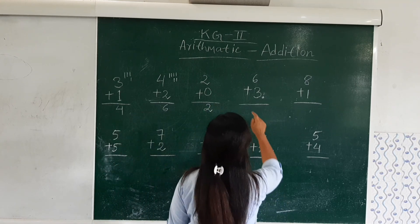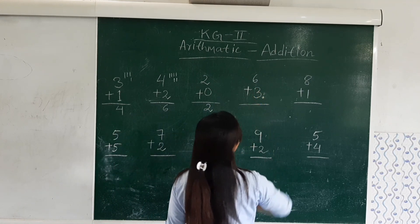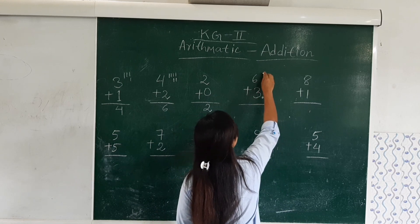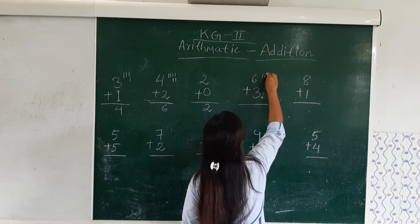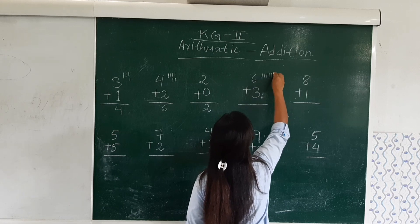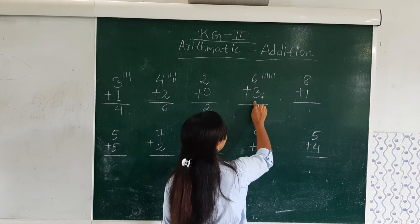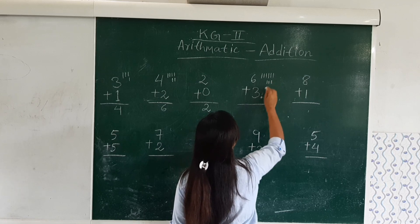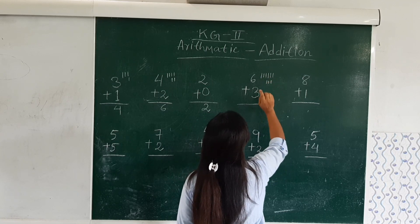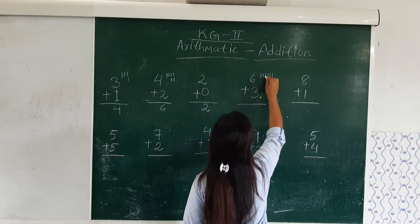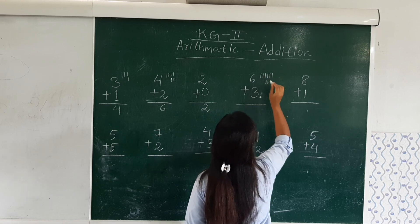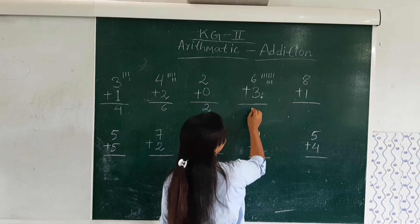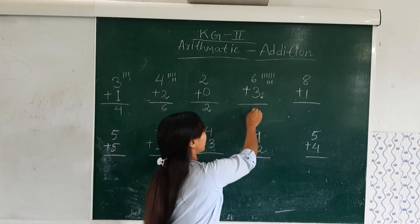Next one: 6 plus 3. We will mark 6 times: 1, 2, 3, 4, 5, 6. Here we have 3, so we mark 3: 1, 2, 3. Now let's sum all together: 1, 2, 3, 4, 5, 6, 7, 8, 9. So we have the result 9.